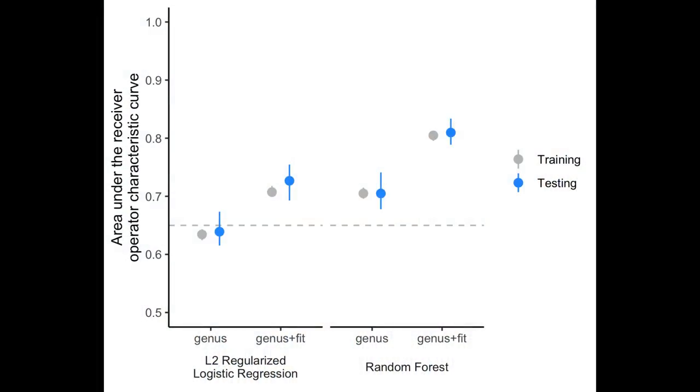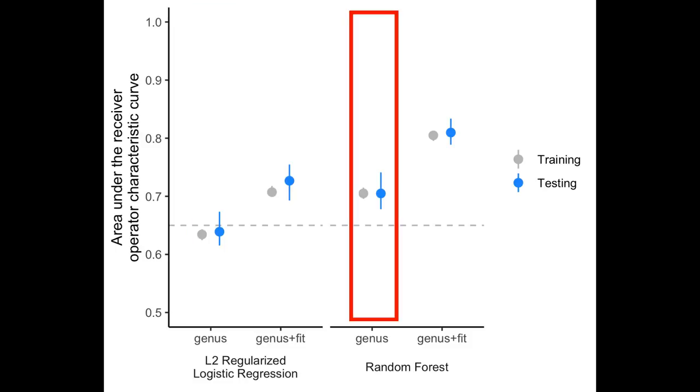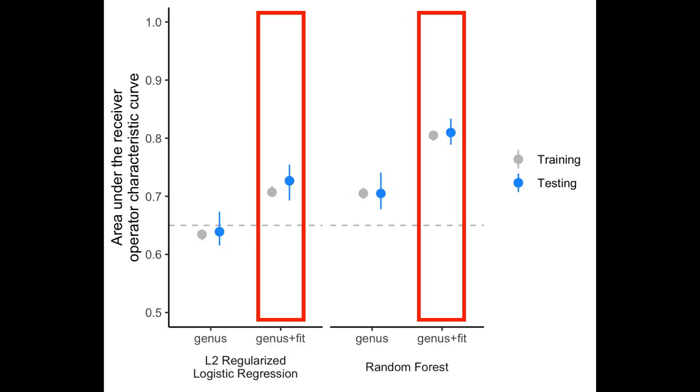In recent episodes of Code Club, I've been showing how we can use MicropML, which is an R package for implementing machine learning algorithms, to figure out whether we can predict whether somebody has a screen-relevant neoplasia, or SRN — think colon cancer — in their colon based on the relative abundance of different bacterial genera found in a stool sample. Using L2 regularized logistic regression, we could find an AUC of about 0.64; random forest models gave about 0.71. Adding the FIT result — a measure of blood in the stool — raised AUC values by about 0.1.